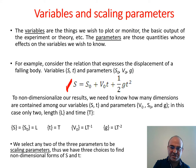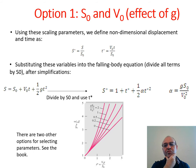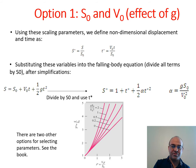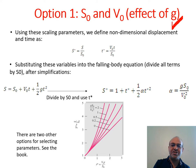Looking at the dimensions of all terms, we see that the combined dimension is L. Now we want to make this equation dimensionless. The equation is S = S₀ + V₀T + ½GT². There are multiple options. One option is to make it dimensionless using S₀ and V₀ and study the effect of G. Based on this, we define the non-dimensional displacement term S* = S/S₀ — now S* is dimensionless because it's length over length.